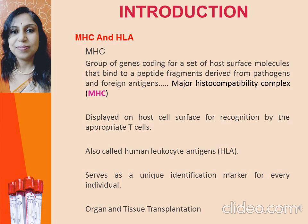These are located on the short arm of chromosome 6. In human beings, the complex is also called the Human Leukocyte Antigen or HLA system. HLA is basically a group of tissue antigens controlled by a chromosomal region bearing a number of genetic loci, each with multiple alleles that have relevance to transplantation, rejection, reaction and other immunological phenomena. It serves as a unique identification marker for every individual. Following transplantation of a graft, the recipient mounts an immune response against the graft's MHC molecules.